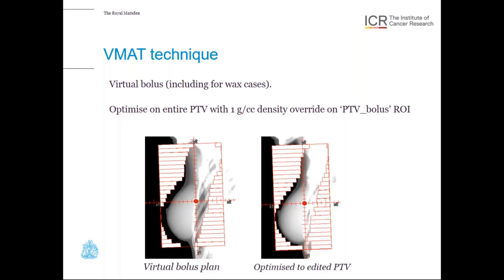Here's an example comparing two corresponding fields. The left field was planned using the virtual bolus technique, and the right was planned and optimized to an edited PTV. On the left, we achieve much better skin flash, meaning we are shaping our MLCs to the entire target volume and should be more robust to either setup errors or increases in breast tissue due to swelling or potentially a seroma.